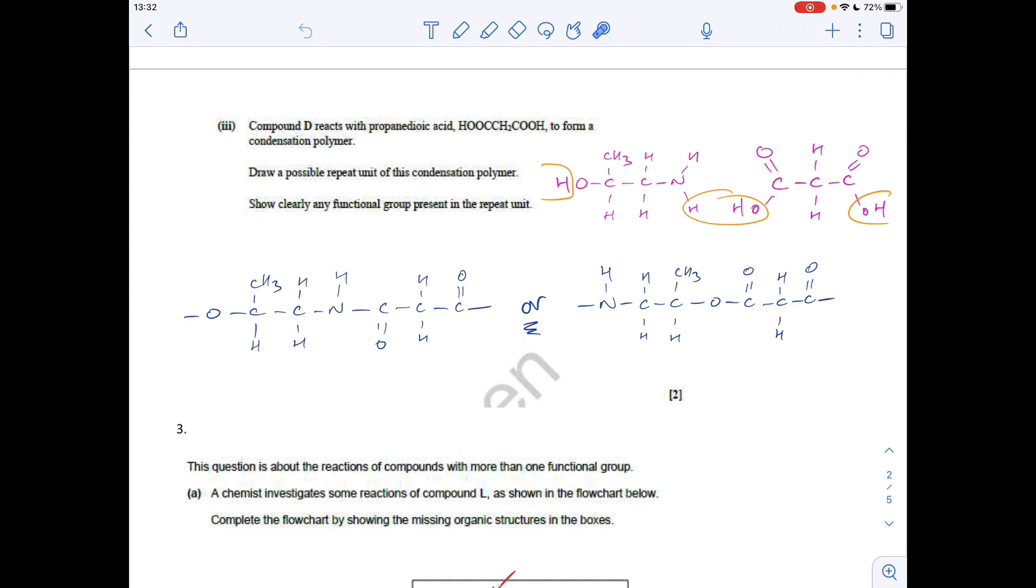Compound D reacts with propane dioic acid to form a condensation polymer. Draw a possible repeat unit and show clearly the functional group present. There's compound D, all I've done here is on that carbon there I've put the CH3 pointing up, and the OH group pointing out that way, it makes it a lot easier to visualize. There's the NH2 group, and there's that propane dioic acid. To form a condensation polymer, we need to generate a water molecule. So we take the OH group from the carboxyl group from the propane dioic acid, that's going to happen at both ends, and an H from the NH2 group, and obviously the other H is from this hydroxyl group here.